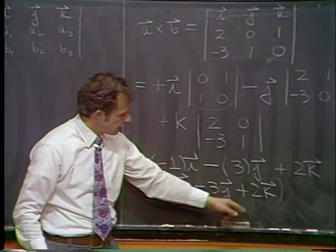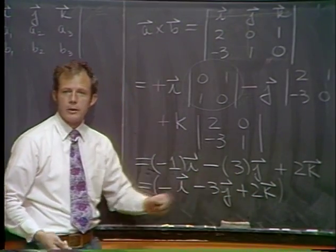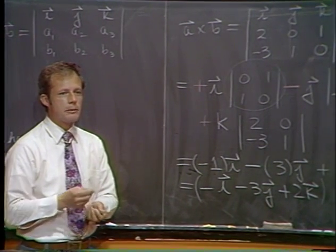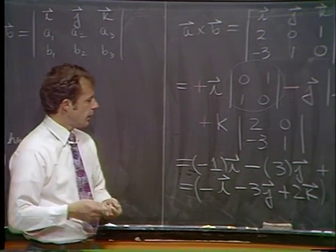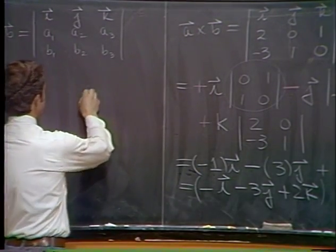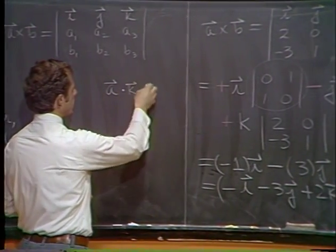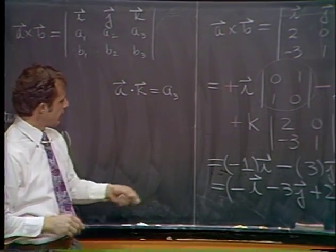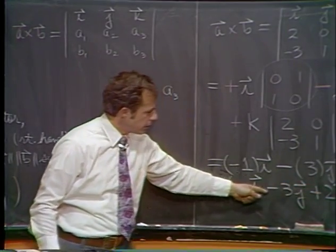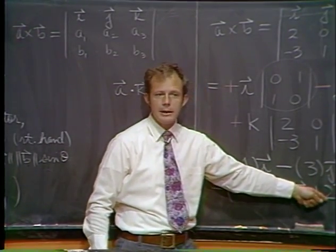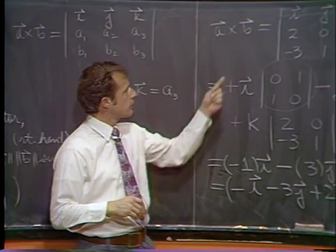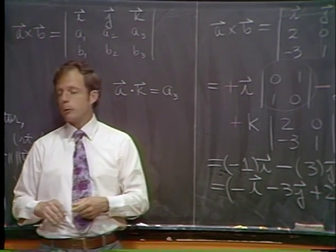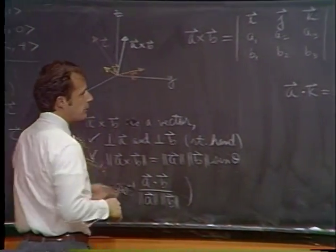As a check: the k component of a cross b is +2, meaning the cross product points upward, consistent with our geometric picture. The vector dotted with k gives its k-component, which is indeed positive. If the direction were wrong, we'd need to recheck the picture or the computation.